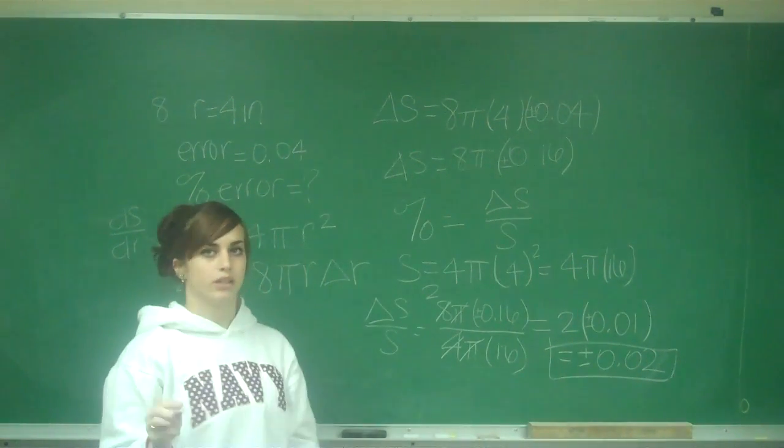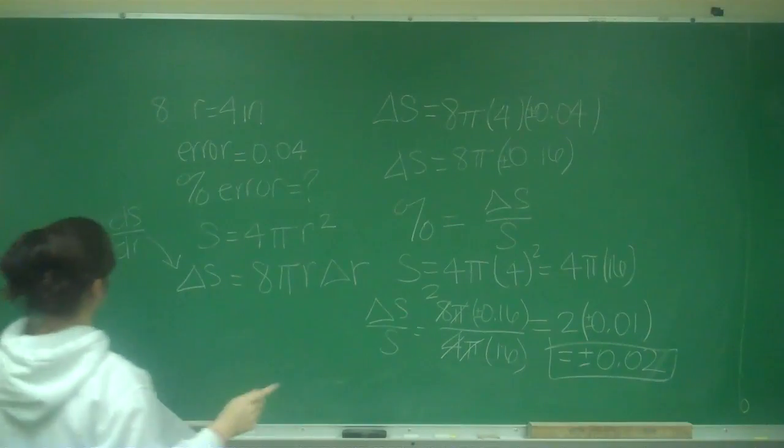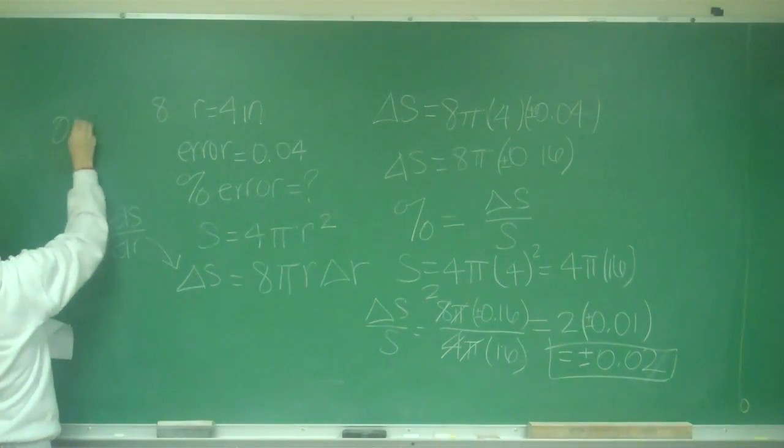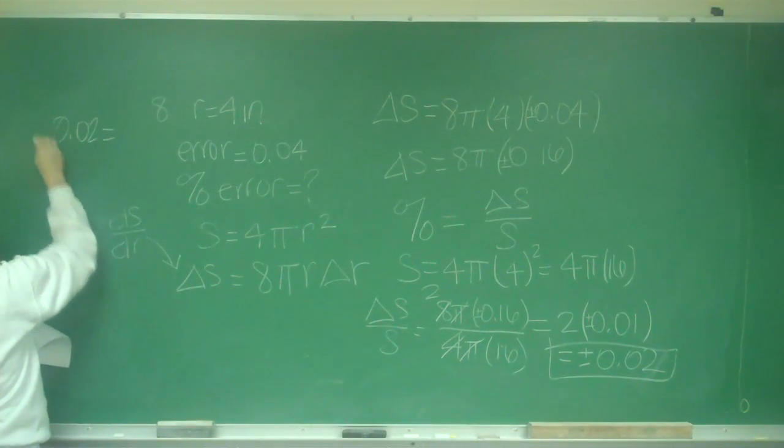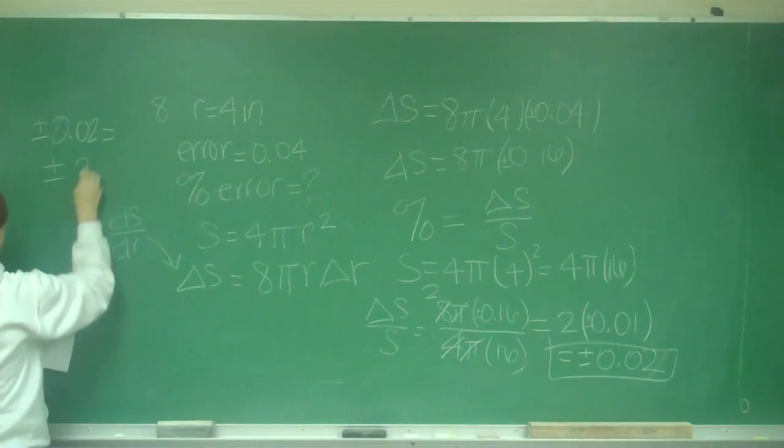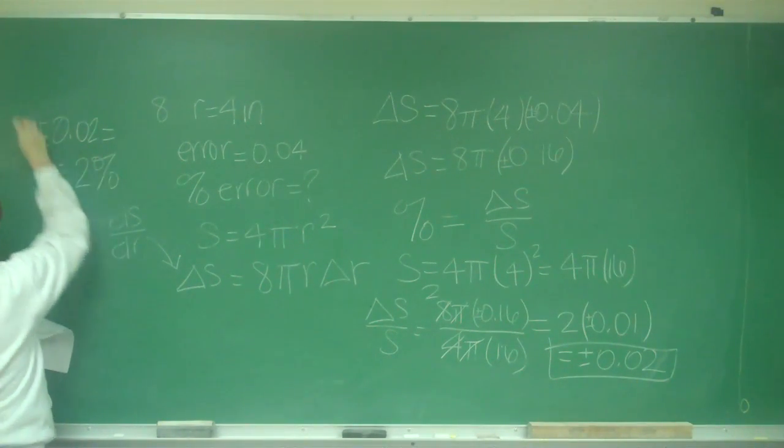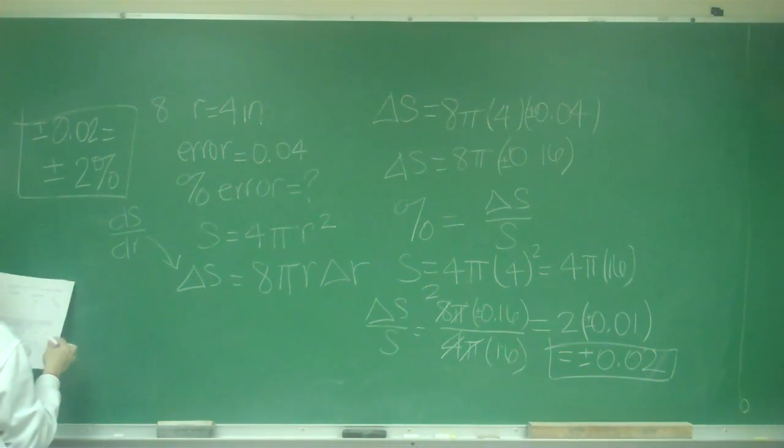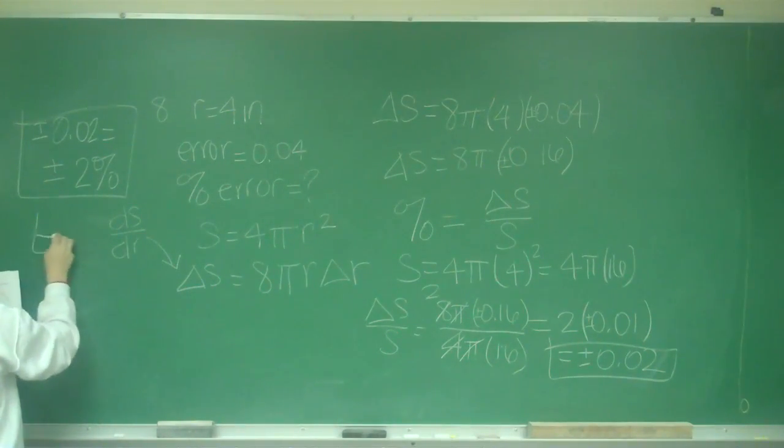But they want it as a percent, not as a decimal. So that is going to be 0.02 equals plus or minus 2 percent. And that is choice E.